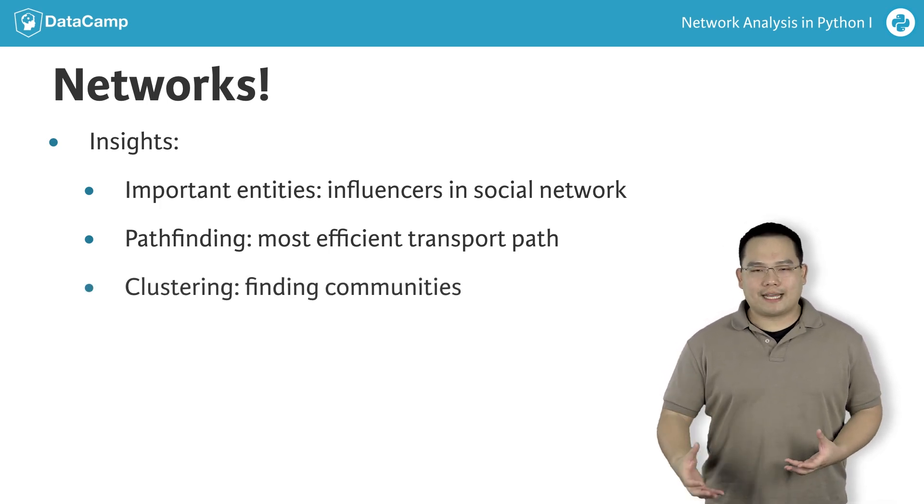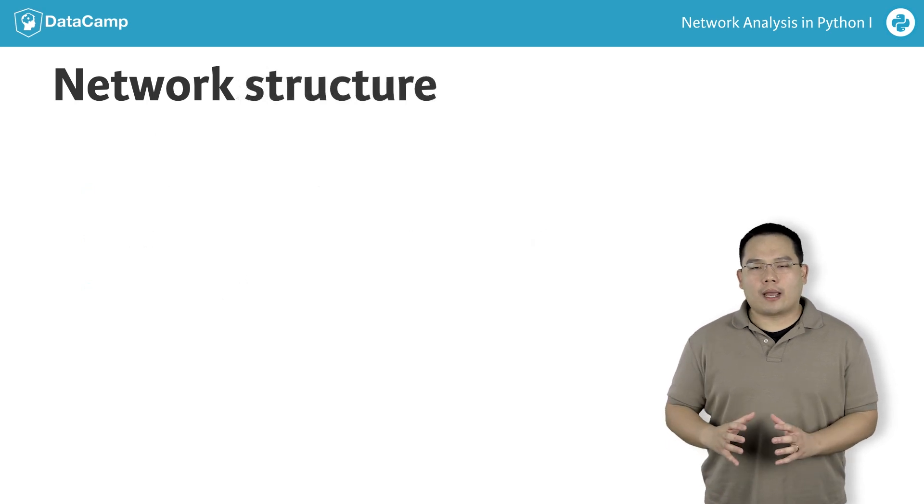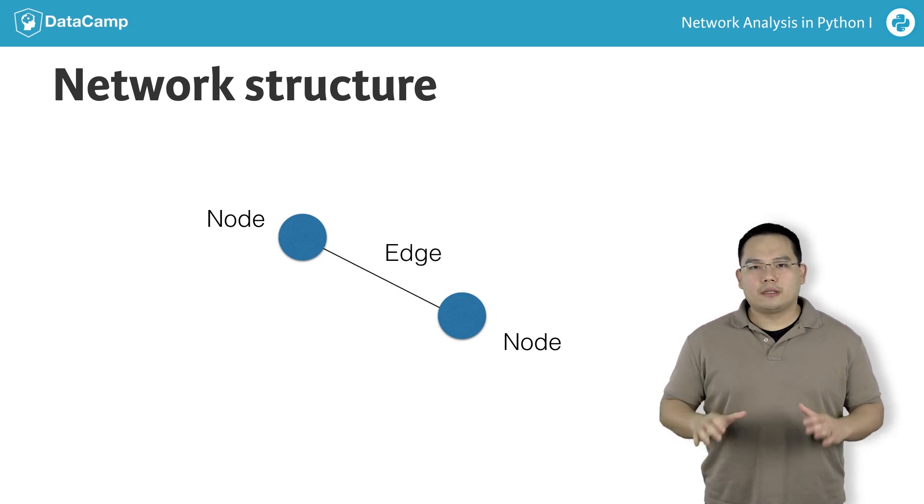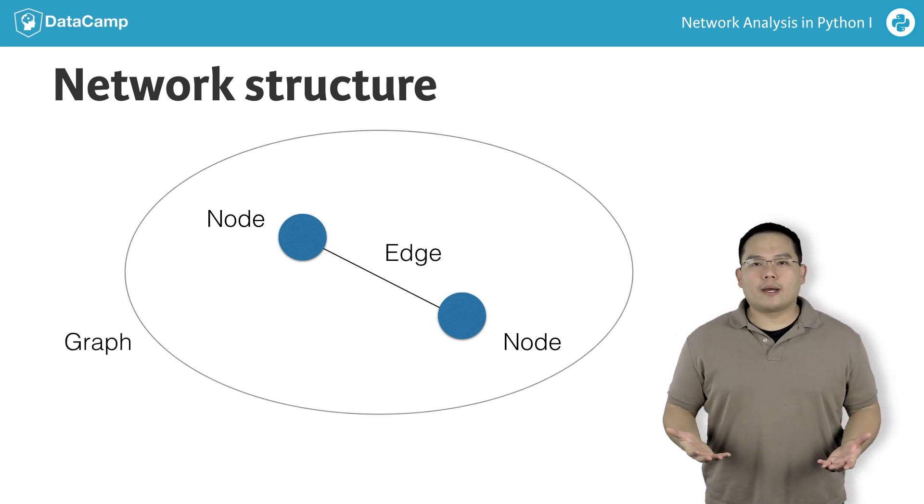Let's go a bit more technical. Networks are described by two sets of items, nodes and edges. Together, these form a network, otherwise known in mathematical terms as a graph.